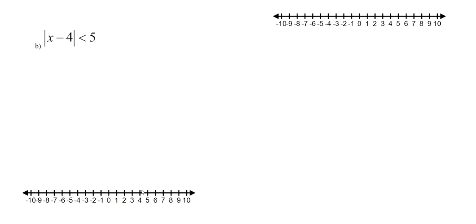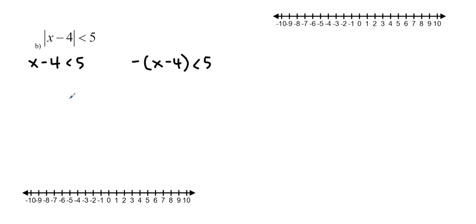Now let's use absolute value with an inequality. We have absolute value of x minus 4 less than 5. We still do the positive and negative versions. For the positive case, we just leave the inequality and move the 4 over: x minus 4 less than 5 gives x less than 9. For the negative case, we divide by negative 1, which flips the inequality sign: x minus 4 becomes negative, giving us x greater than negative 1.